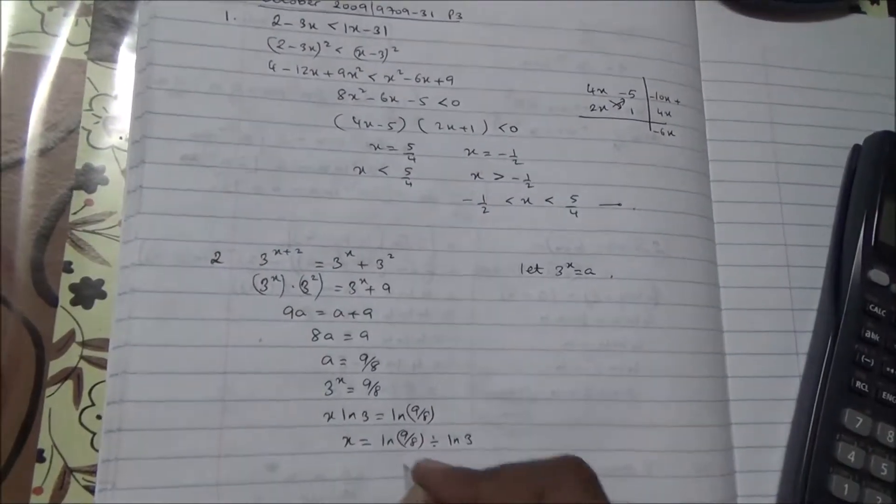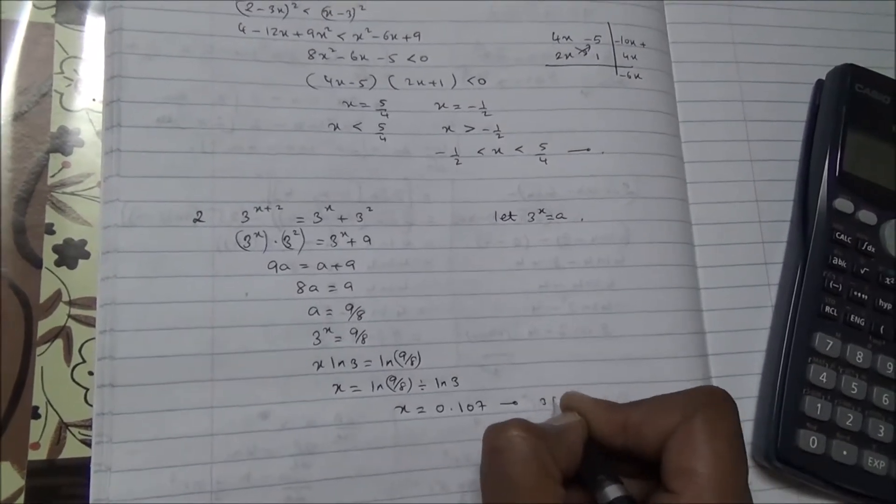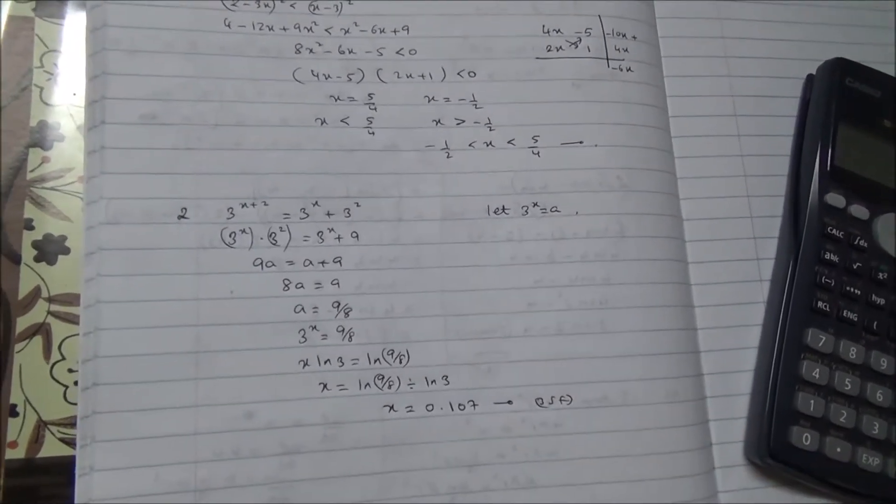Therefore, x is going to be equal to 0.107 to 3 significant figures. Here we are for question 2. Thank you.